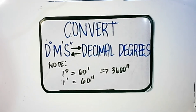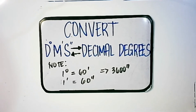DMS stands for degree, minutes, and seconds. We know that degrees are represented by a small circle, minutes by a single apostrophe, and seconds by a double apostrophe.